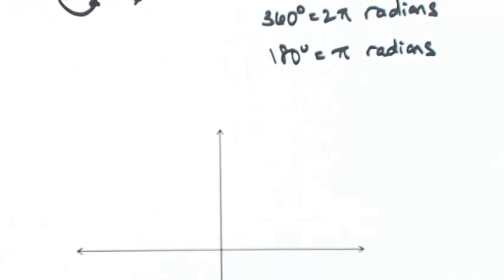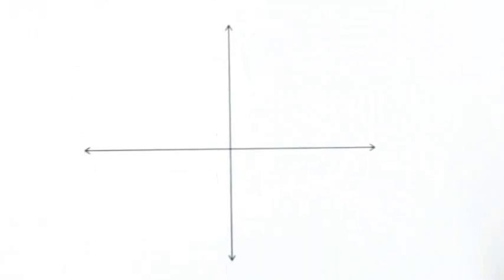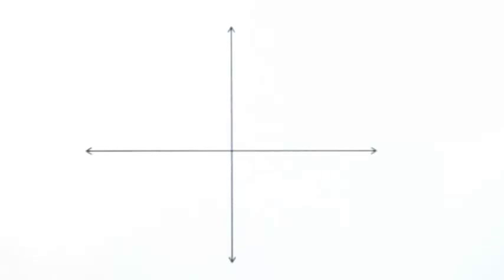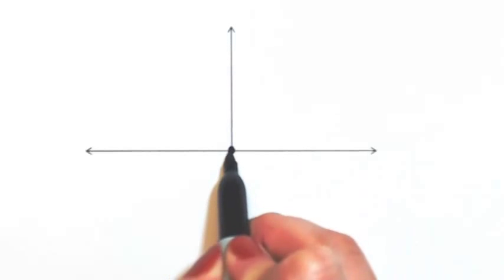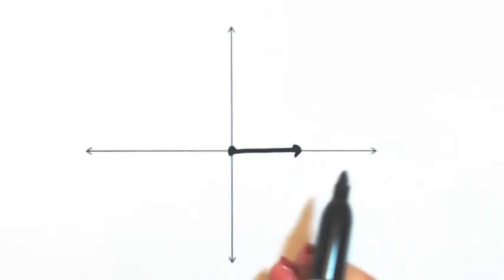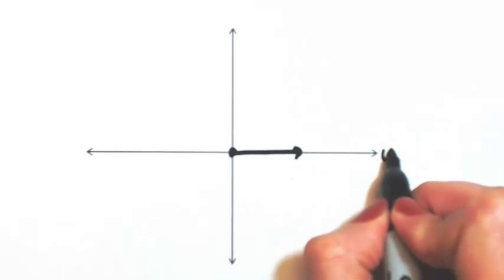So let's put that together in this coordinate plane. So again, if we start from standard position, we don't go anywhere, this would just be 0 radians.